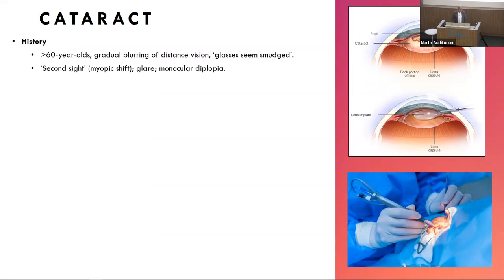Cataract generally presents in over-60-year-olds - the average age for cataract surgery in Australia is in the 70s. There's gradual blurring of distance vision; patients often say their glasses seem smudged and wiping them doesn't help. Another symptom is 'second sight' - as the cataract gets thicker it bends light more, which paradoxically improves near vision. A patient might say their distance vision has been deteriorating for years but strangely they can now read without reading glasses - that's a typical cataract progression.